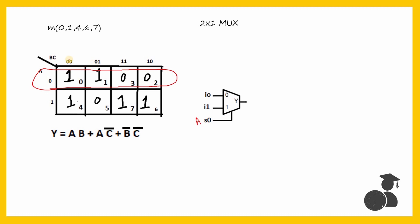Notice: when B is 0, in these two conditions, you are getting 1. But when B is 1, you are getting 0. So when A is 0, the input I0 is B-bar. When A is 1 — that is the second row of the Kmap — Y is 1 in three conditions: either when B is 1, or when C is 0. So this can be represented as B + C-bar.